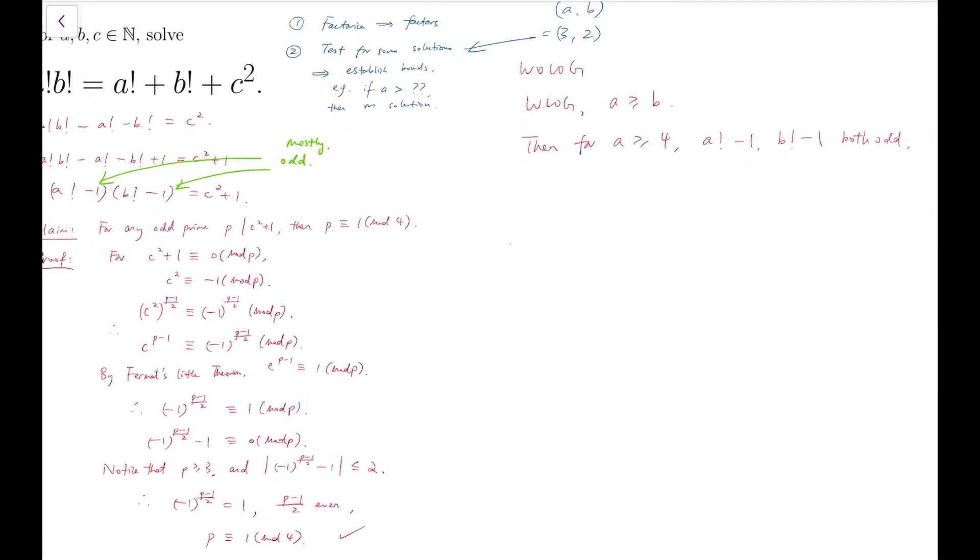And now, because c² + 1 only has odd prime factors of the form 4k + 1, and because both sides have to be equal, we know that a! - 1 and b! - 1 must also only have odd prime factors. And in other words, a! - 1 must be congruent to 1 mod 4, because all these prime factors are congruent to 1 mod 4, so when they multiply, it will only give 1 mod 4.